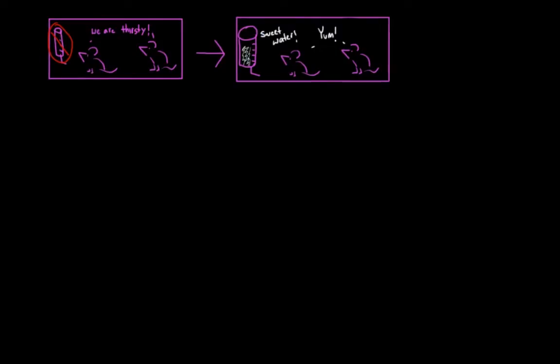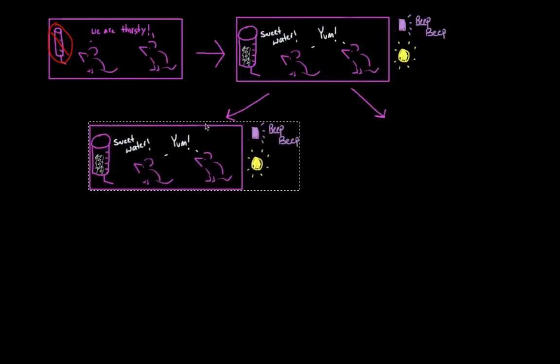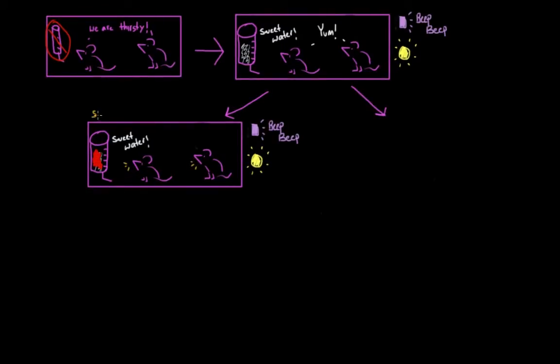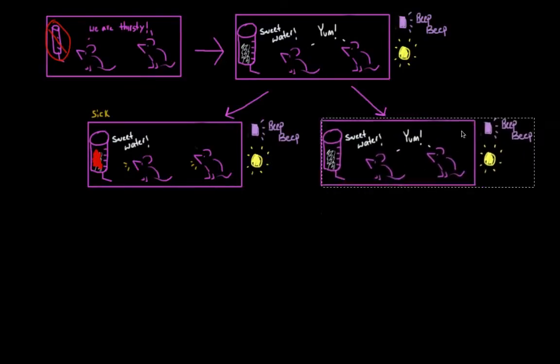So the sugar is really novel to them and they're pretty excited about it. And when the rats go to drink this very exciting sugar water, a tone sounds and a light flashes. And these things all happen at the same time. So these rats actually belong to two different groups. For the first group, a tasteless, odorless substance has been added to the sugar water that's going to make them violently ill. It's going to make them physically ill. The other group has not been given this substance. They just have plain sugar water.